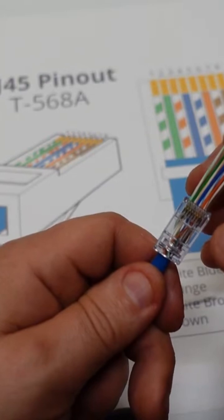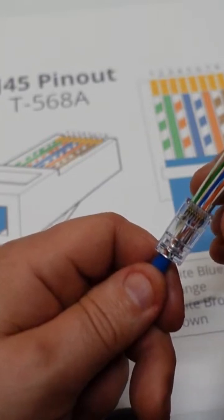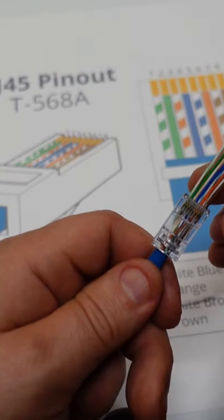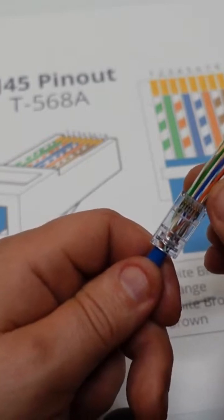So we're going to go: green, white-green, and then we're going to go orange, white-blue, and then we're going to go blue, white-orange, brown-white, and brown.